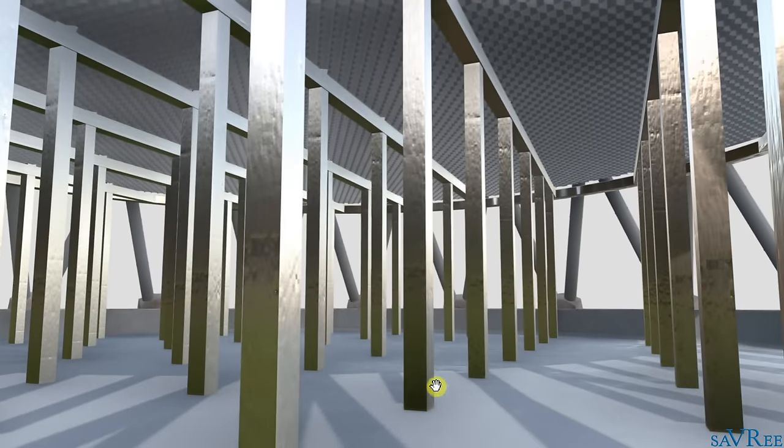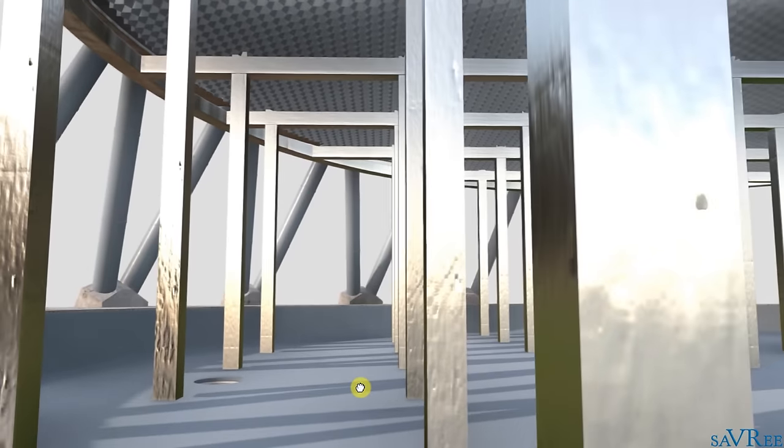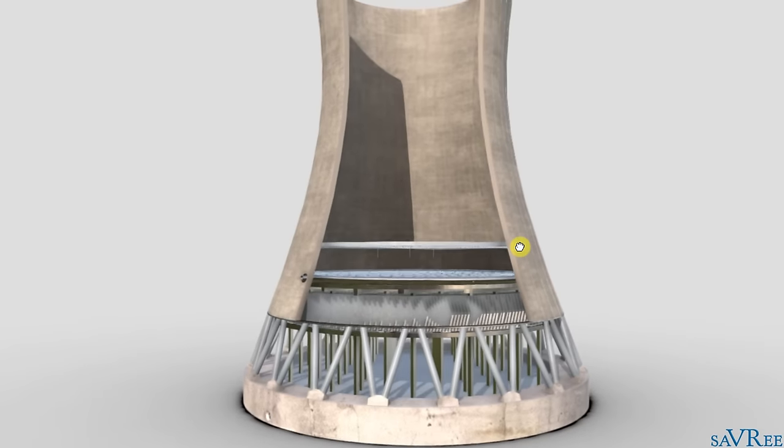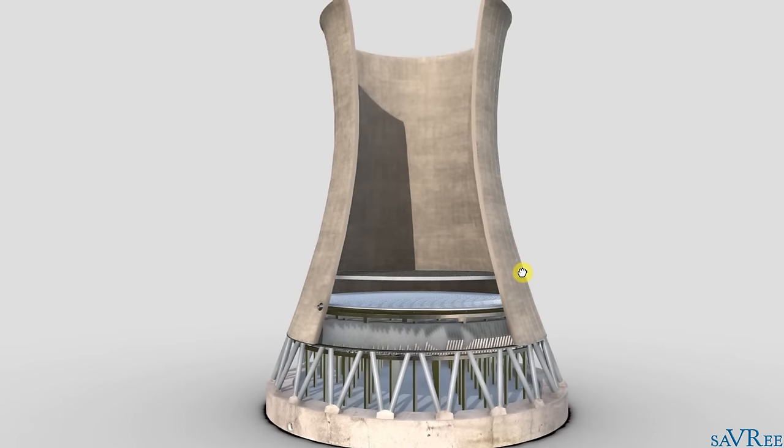The basin is also referred to as the reservoir. Once the water drops into the basin, its temperature has reduced. So I hope you now know how a natural draft cooling tower works.